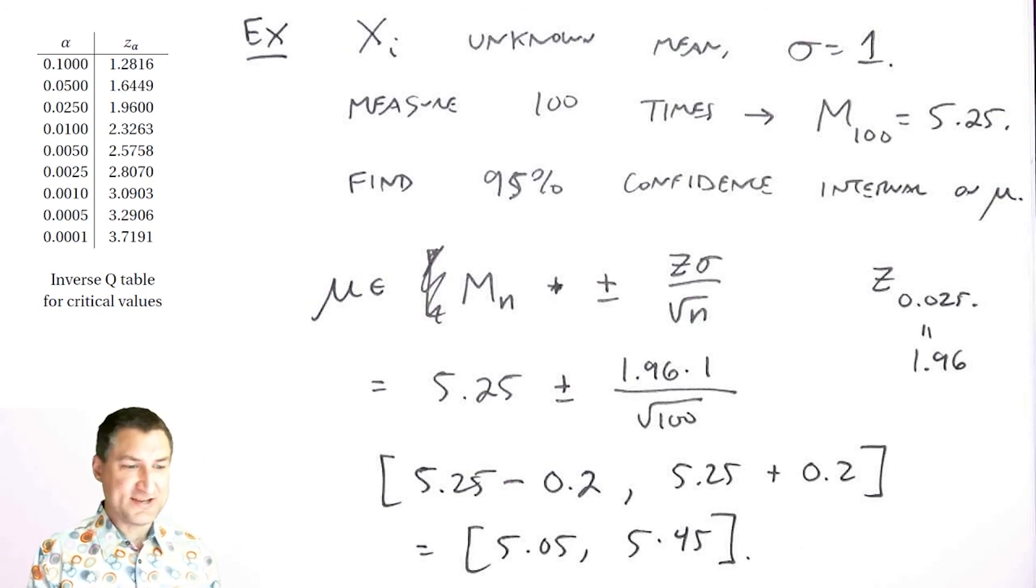In practice, it's kind of weird because we're saying we know the variance but not the mean. When I don't know either the variance or the mean, you use different tables. Instead of using a Q table, you use tables for the student's t distribution, chi-squared distribution, depending on the type of interval you want to find and the information you know.